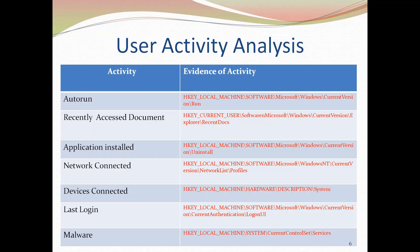For applications installed, details are available in the Uninstall key in HKEY_LOCAL_MACHINE. Whatever programs have been installed and uninstalled, those details can be obtained from this Uninstall key. For network connected or accessed, the details of which network was used — wired or wireless — and the kinds of packets flowing between the user's system and a remote system can be found in registry.